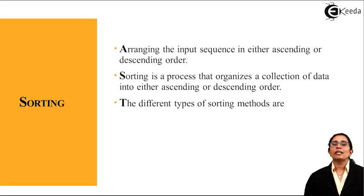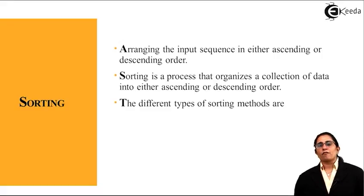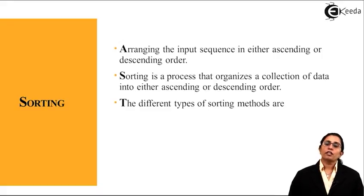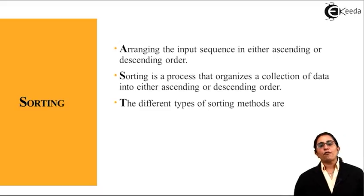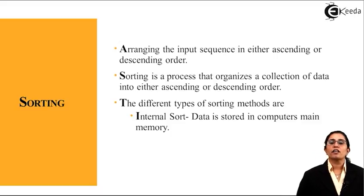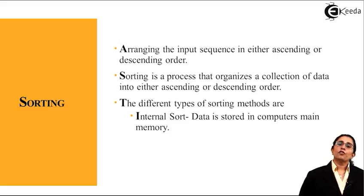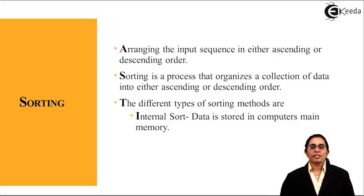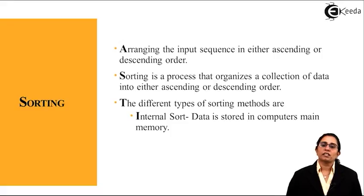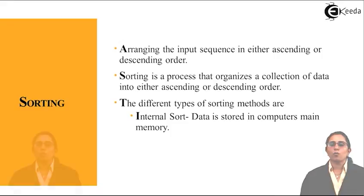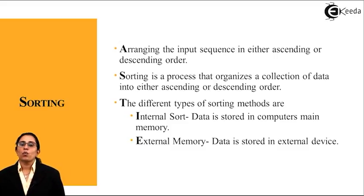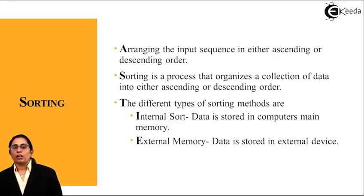The different types of sorting methods: in general terms, we can make people stand from tallest to smallest or smallest to tallest. In computers, the different sorting methods are: the first is known as internal sort, which uses the computer's main memory — processing is done faster. The second is external memory sort, where we require an external device to store and sort the data.